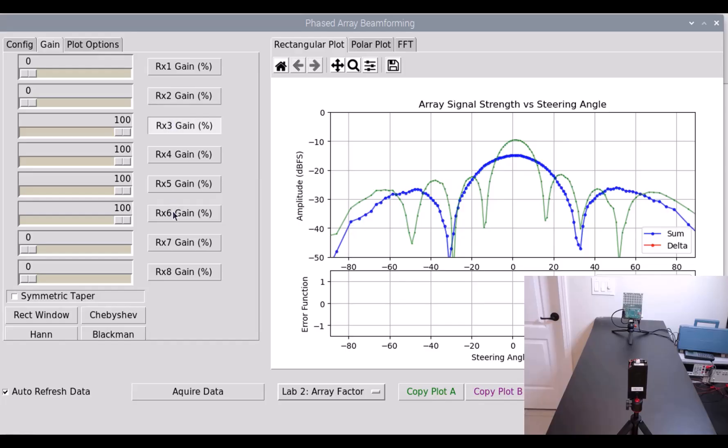And of course, we can do a two-element array, which is going to be very, very broad. And the gain goes down even further. So we just measured the array factor pattern of our antenna array, and we saw measured values that were fairly close to what we calculated. But we also saw that as we steered the array away from mechanical boresight that the main lobe beam width widened.